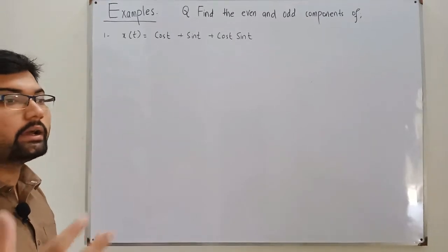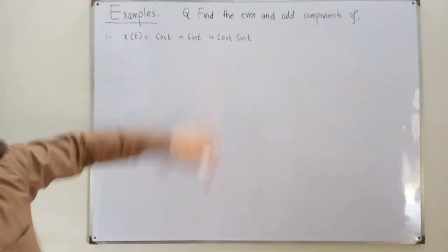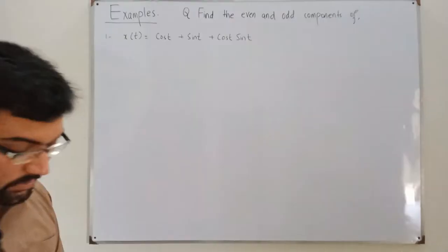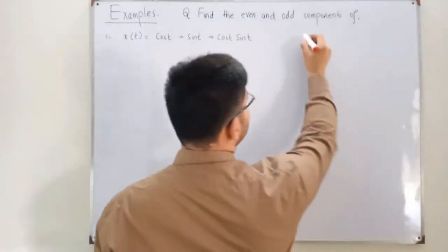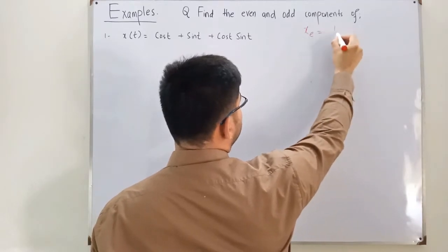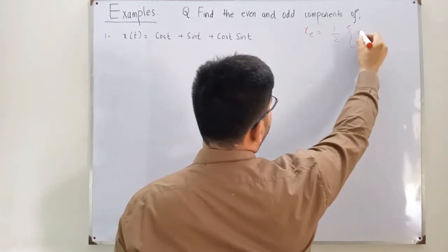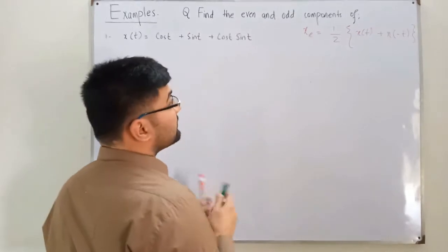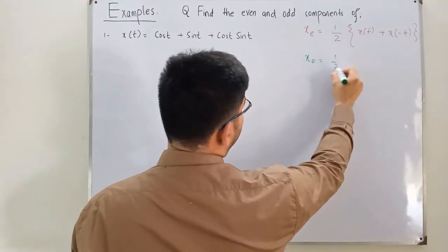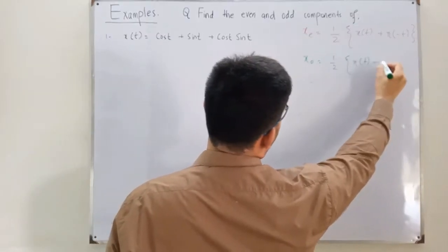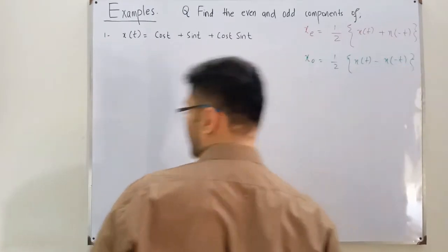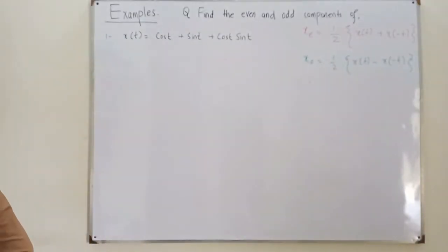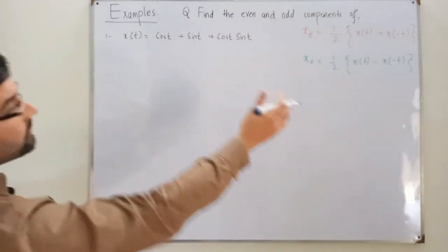Any general signal can be written as a sum of its even and odd components. The even component is: x_e(t) = ½[x(t) + x(-t)], and the odd component is: x_o(t) = ½[x(t) - x(-t)]. For this signal we have x(t), so we now find x(-t).